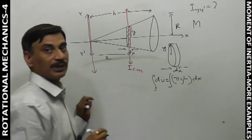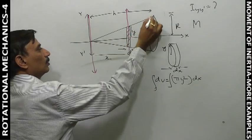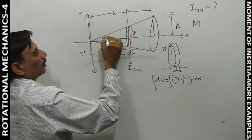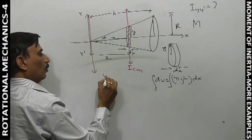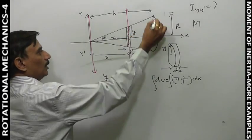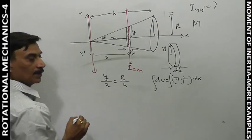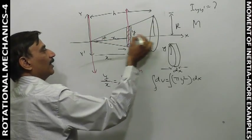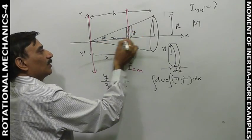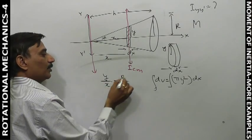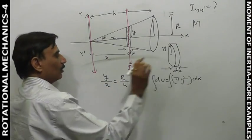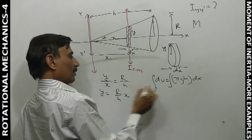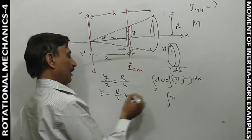Now if we look at two similar triangles, we have y here, x here, r here. The angle theta is the same for both. So by similar triangles, y/x is equal to r/h, which gives y is equal to (r/h)·x.